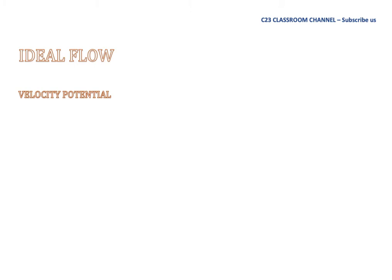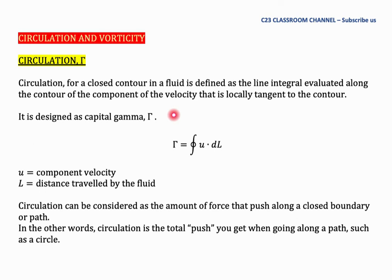In this lesson we will introduce another parameter called the velocity potential. Before we learn more about the velocity potential, there are two terms that you need to understand: circulation and vorticity. We go first to circulation. Circulation for a closed contour in a fluid is defined as...